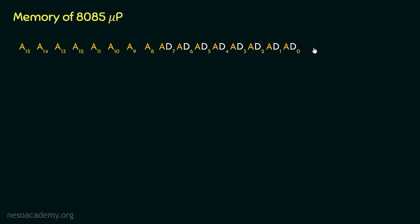Since we are talking about the address bus, from the multiplexed address and data bus, we are only highlighting the address part. So we have got 16 bits. Now with 16 bits, how many different combinations of binary sequences can we have?